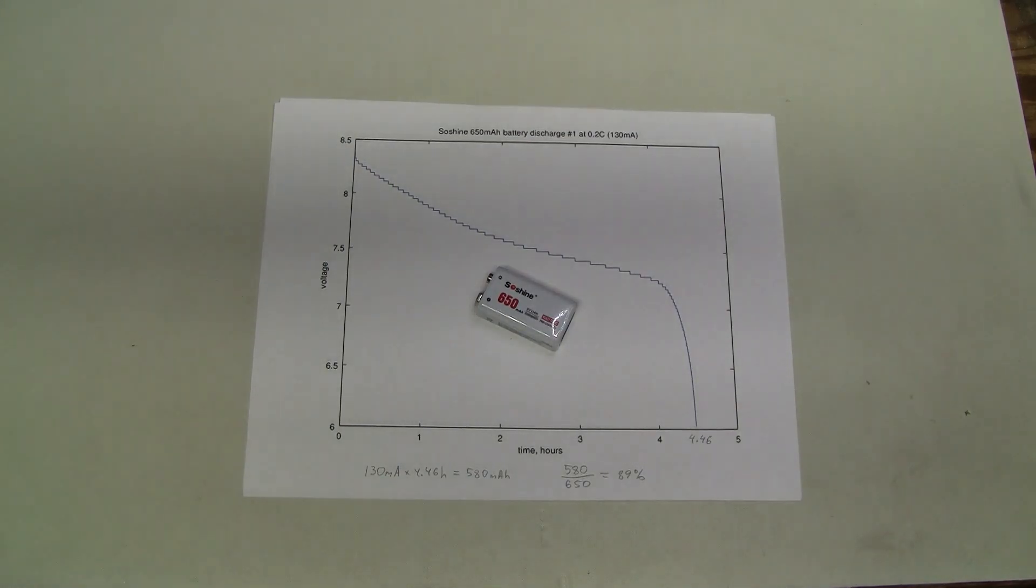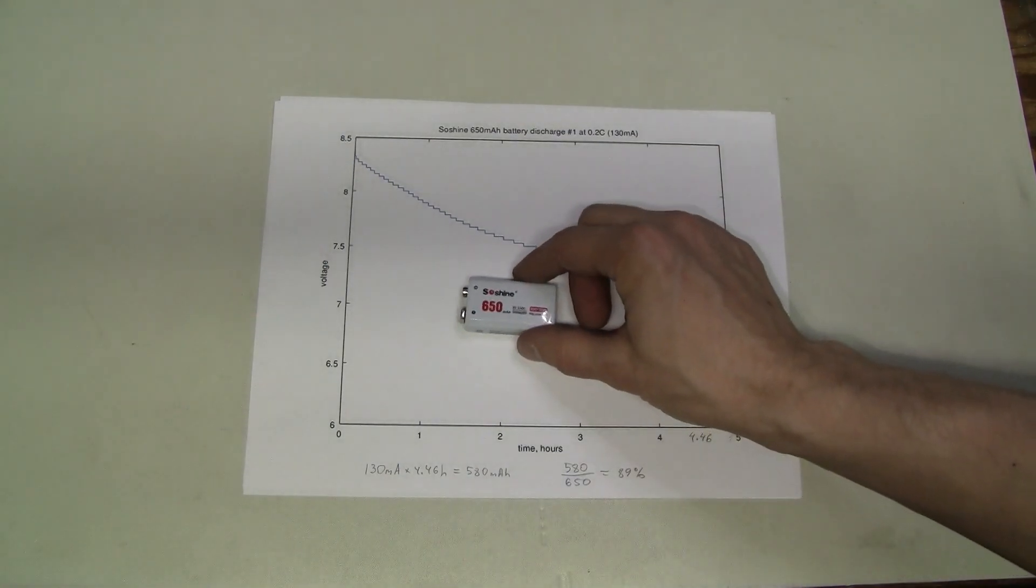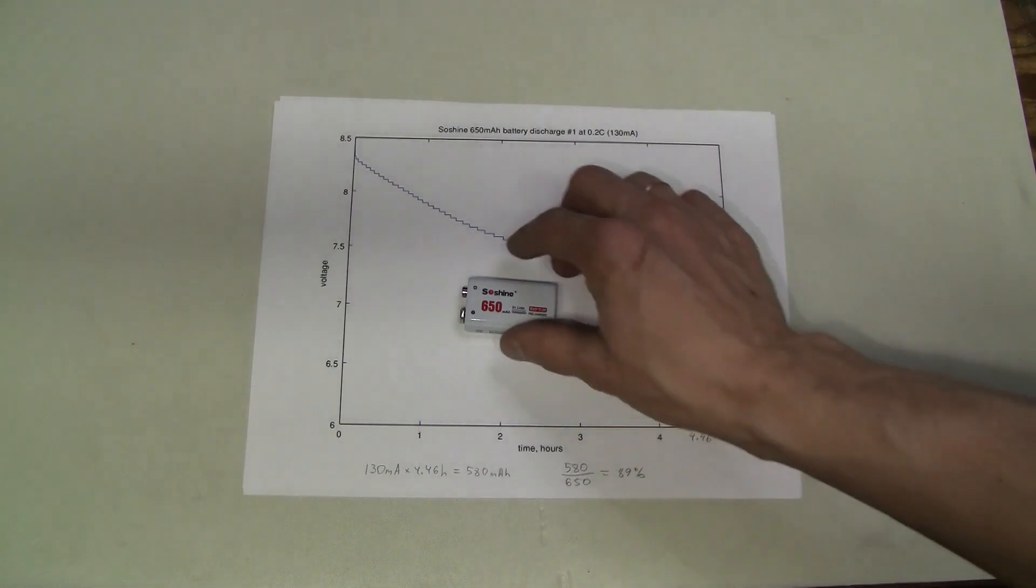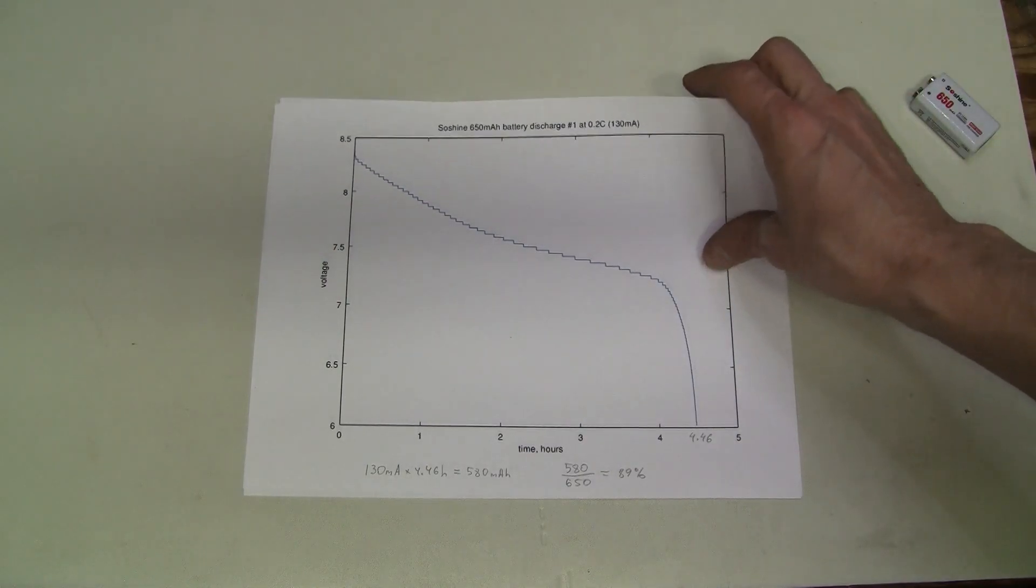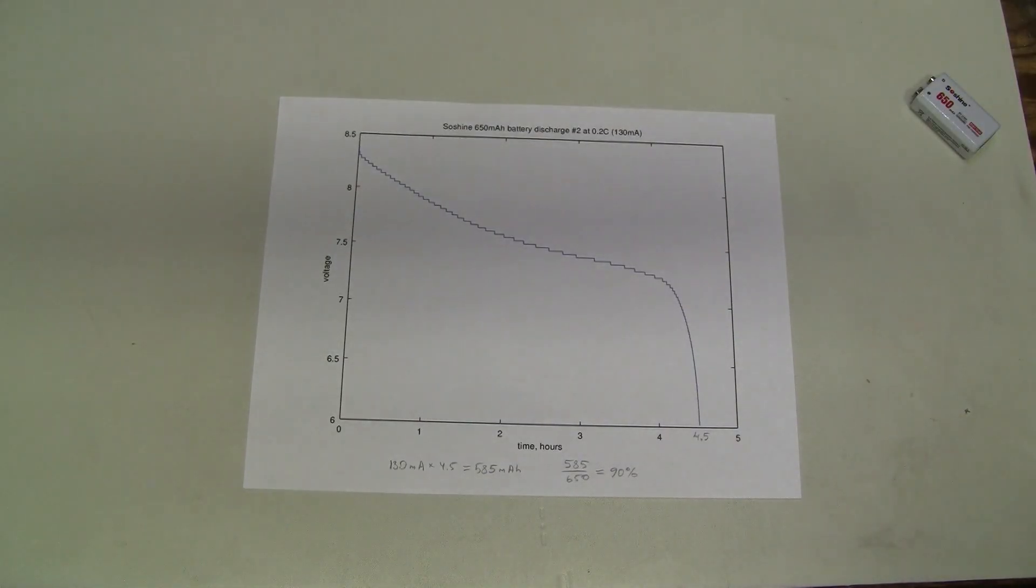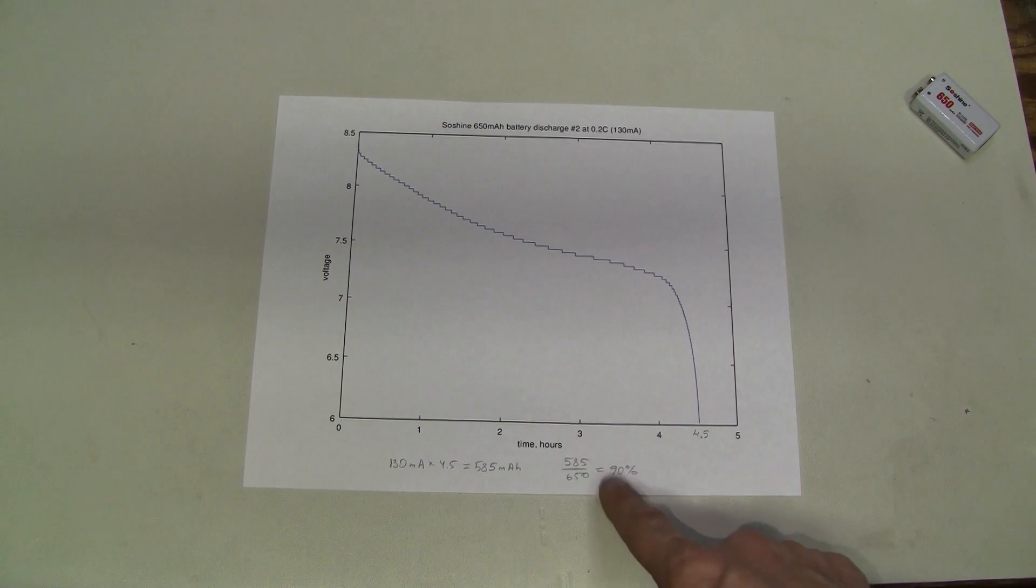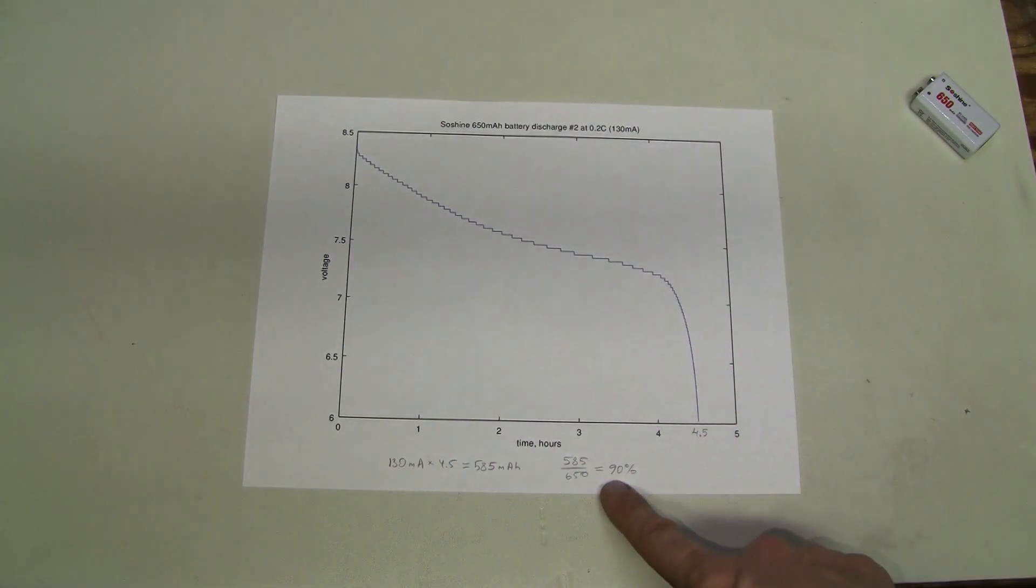Now this one. The rated capacity is 650 mAh and I measured 580 mAh which is about 89% of the rated capacity. This was discharge number 1 and discharge number 2 showed something very close to that, 585 mAh or 90% of the rated capacity.